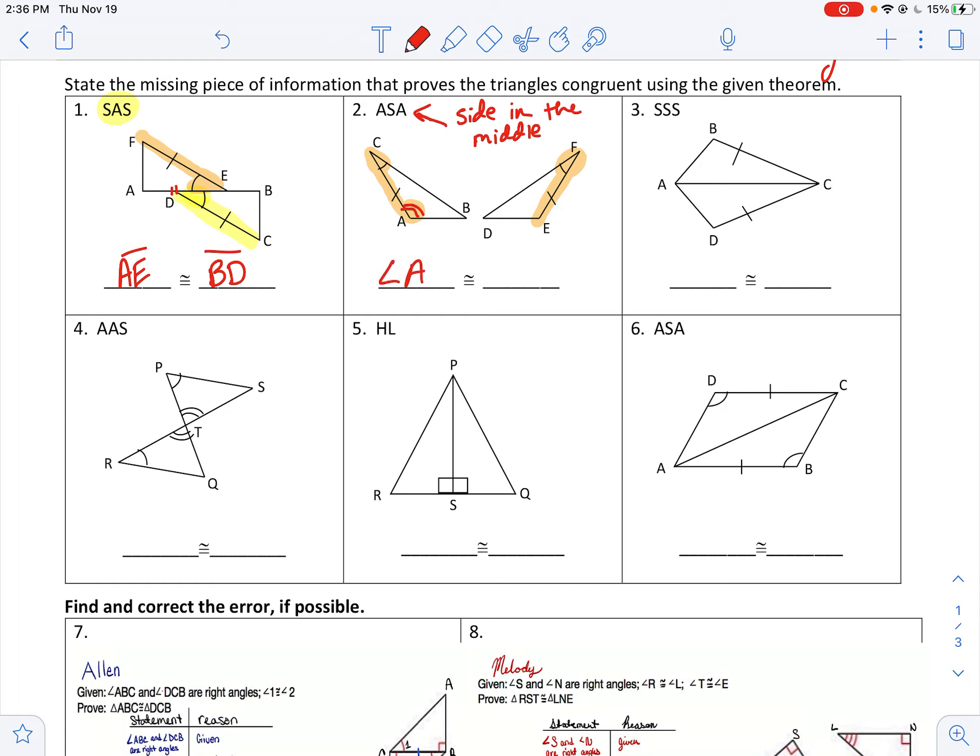So that would be angle A. And now let's look over here. It looks like E would be the one that connects to the side there. So this would be angle-side-angle. So that's angle E. Angle A and angle E congruent.